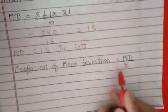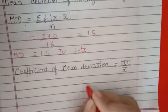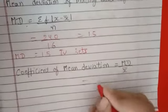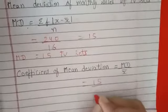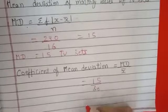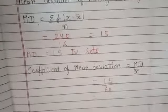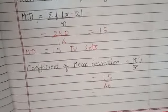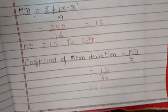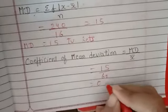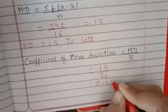Coefficient of mean deviation = mean deviation ÷ x-bar = 15 ÷ 60 = 0.25.